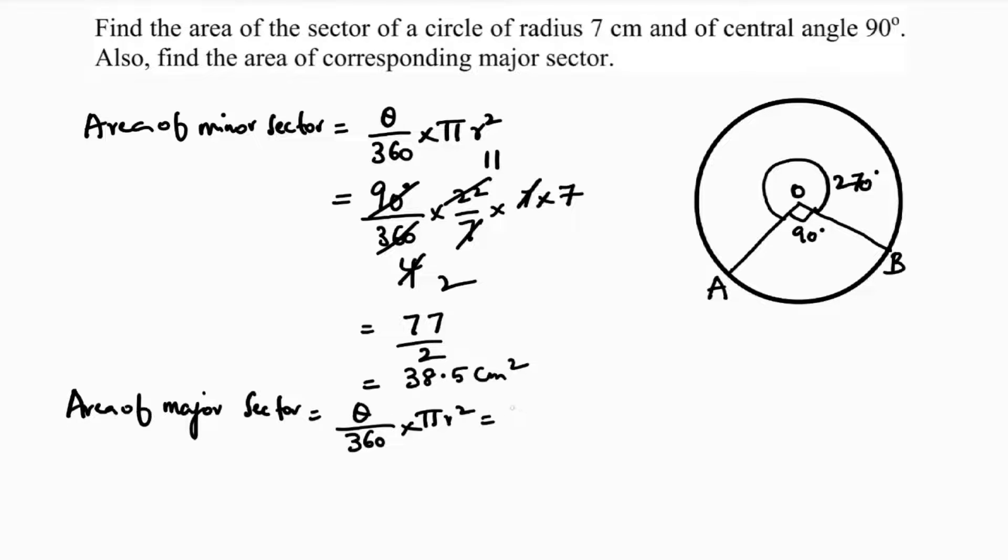So here theta is 270 degrees by 360 into 22 by 7 into 7 into 7. So here 7 and 7 cancel. 90 times 3, 90 times 4, 2 times 2, 2 times 11. So here you will get 77 into 3 which is 231 by 2.